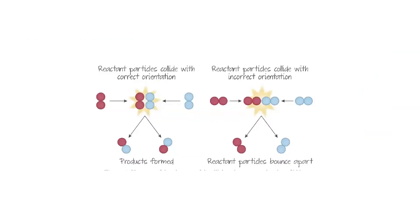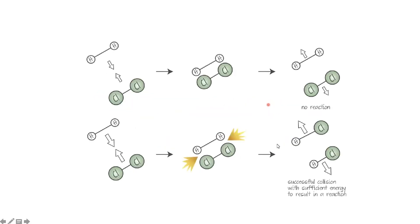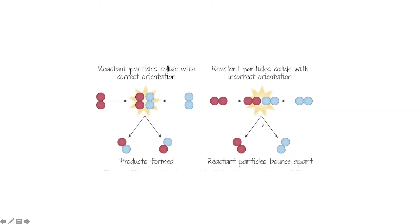So how do particles react? Particles react when they collide with each other in the correct orientation and with the correct energy. Here you can see two molecules coming together and colliding head-on — a reaction has happened on the left side. But on the right side, particles are coming together and trying to react but are unable to do it, so the blue particles remain a blue molecule and the red particles remain a red molecule.